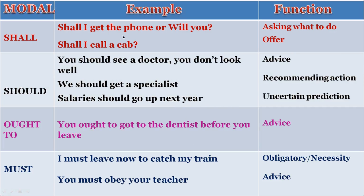Then shall. 'Shall I get the phone or will you?' Shall is most commonly used with I and we — that's the better way of using it. We normally call it Queen's English. Whenever we use shall, it's like Queen's English. 'Shall I call a cab' is an offer. 'Shall I get the phone or will you?' — he's asking what to do.